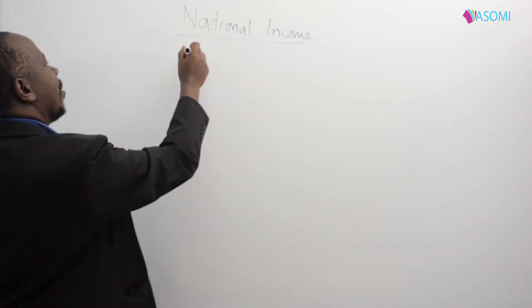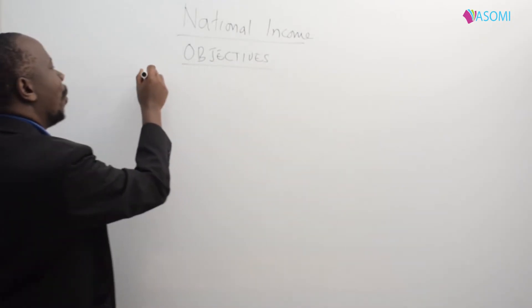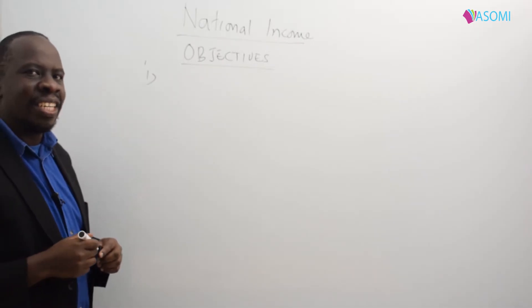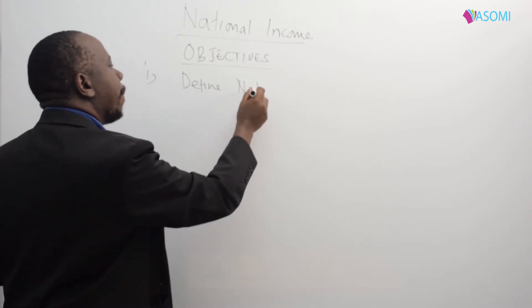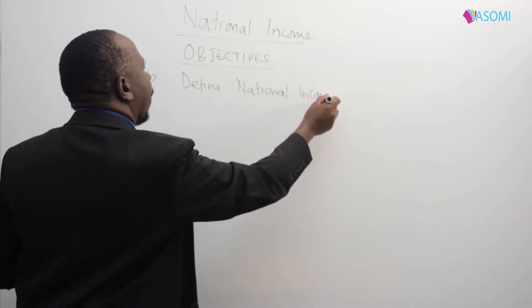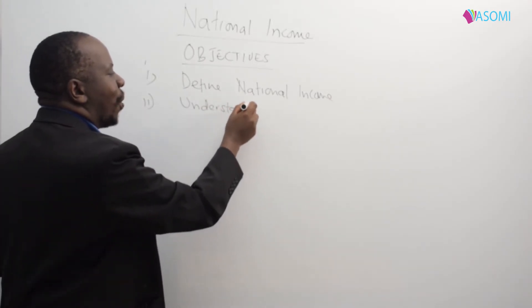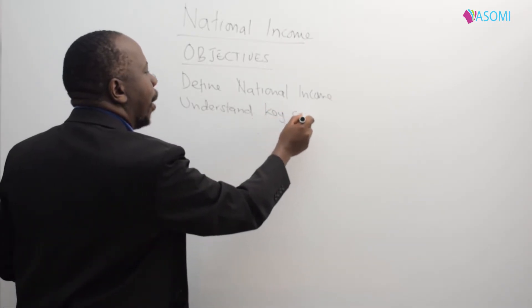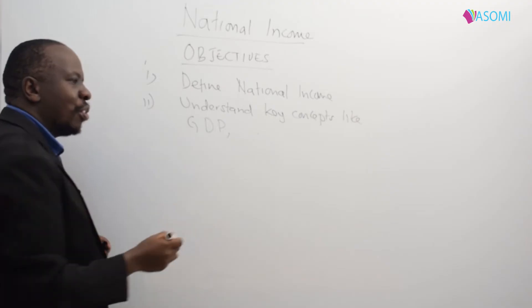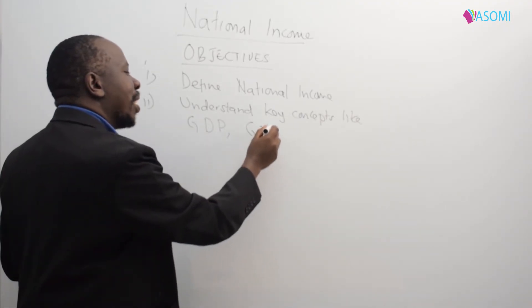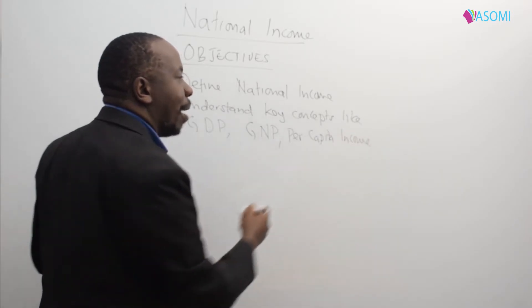The objectives of learning national income: by the end of this series, students should be able to define national income. They should also be able to understand key concepts like GDP — gross domestic product — gross national product, and per capita income, among others.